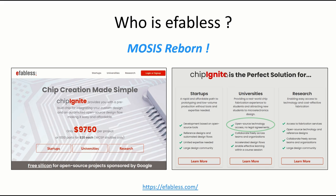Chip Ignite, which is part of eFabless, has open source technology and no legal agreements. So it looks like it's returning to the foundations of MOSIS, which was designed to let students learn how to make integrated circuits. It's also for startups or research groups. The price for them is about $10,000. But Google has an initiative where they seem to be making some runs competitively — some IC fabs available for free. I think that might be just to universities, but I don't know. So we've got eFabless and also something called Chip Ignite.